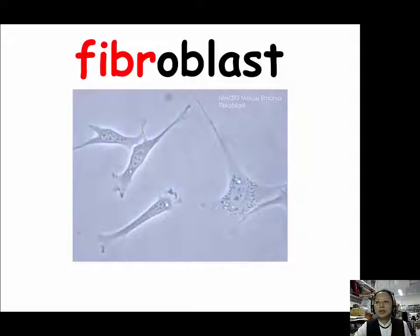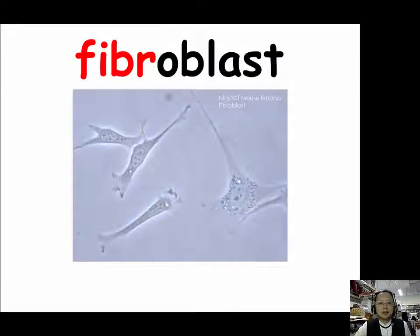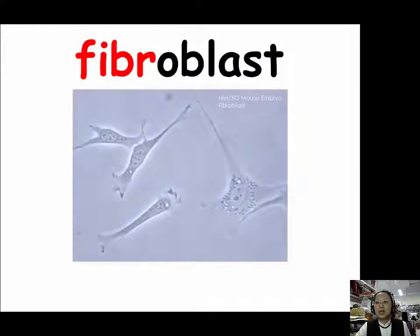A fibroblast is a cell found in connective tissue that produces fibers such as collagen. The fibroblast is not terminally differentiated, so it can differentiate into a chondroblast, collagenoblast, and osteoblast.